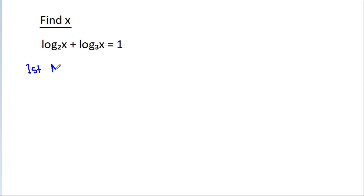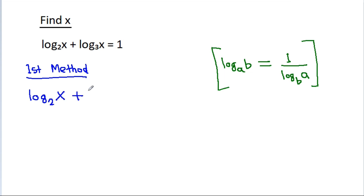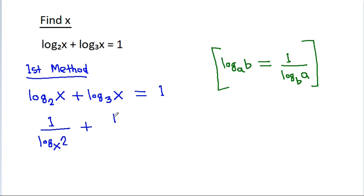First method: we use the property that log base a of b is equal to 1 by log base b of a. So log base 2 of x plus log base 3 of x equals 1 becomes 1 by log base x of 2 plus 1 by log base x of 3 is equal to 1.